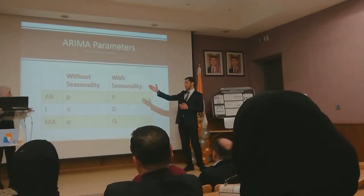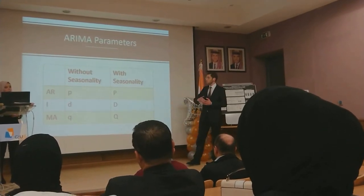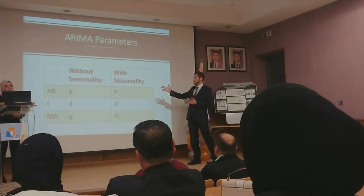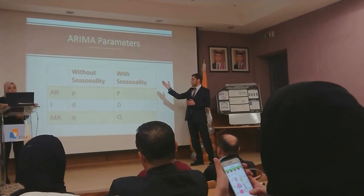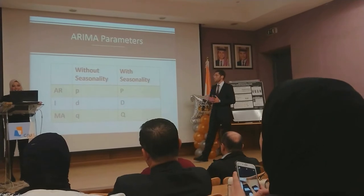We have three parts of ARIMA: the AR, I, and MA. We're going to be using three letters to denote them — P, D, and Q respectively.